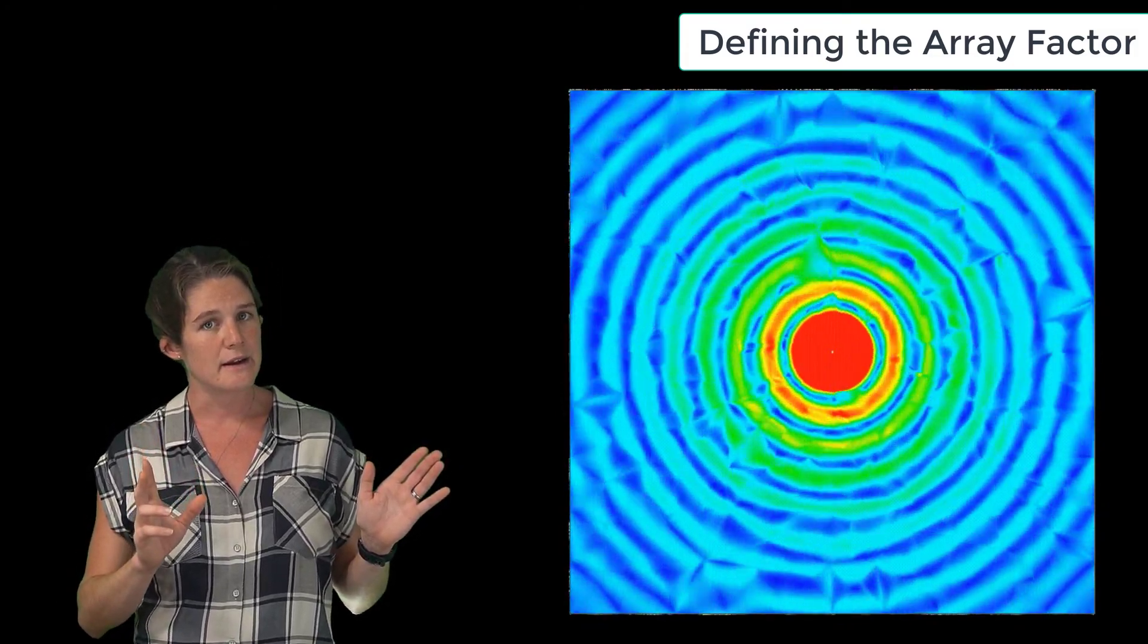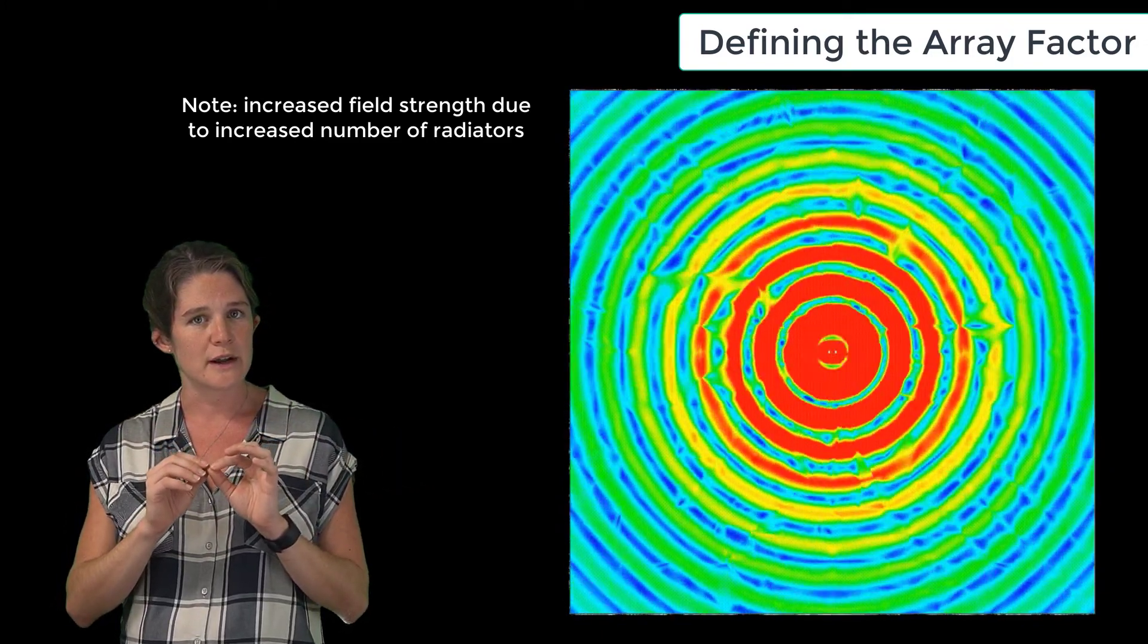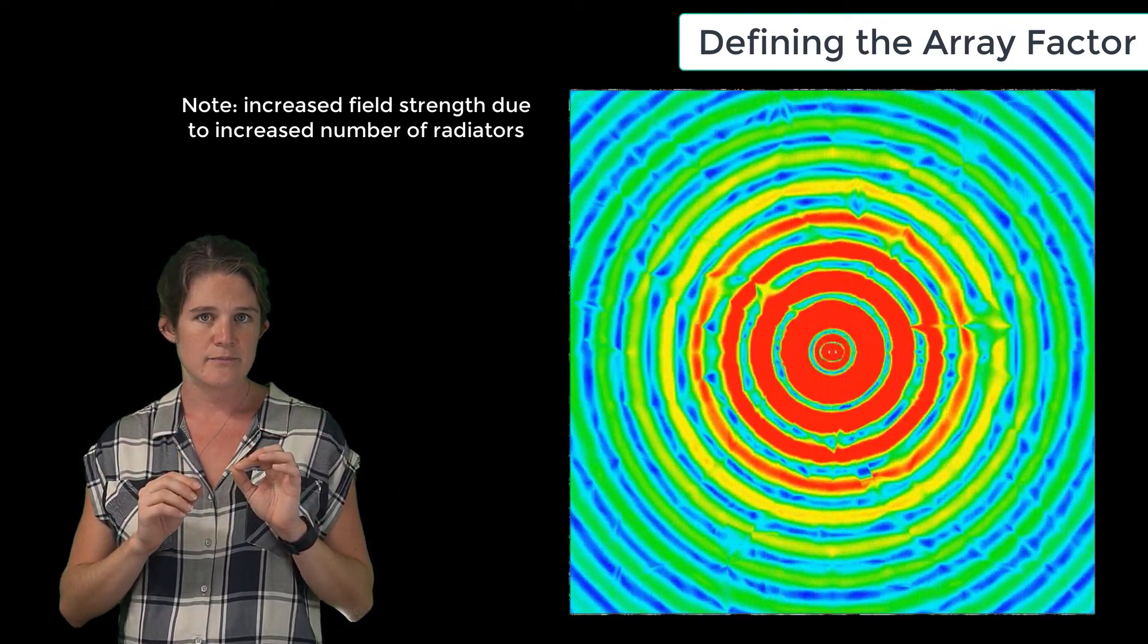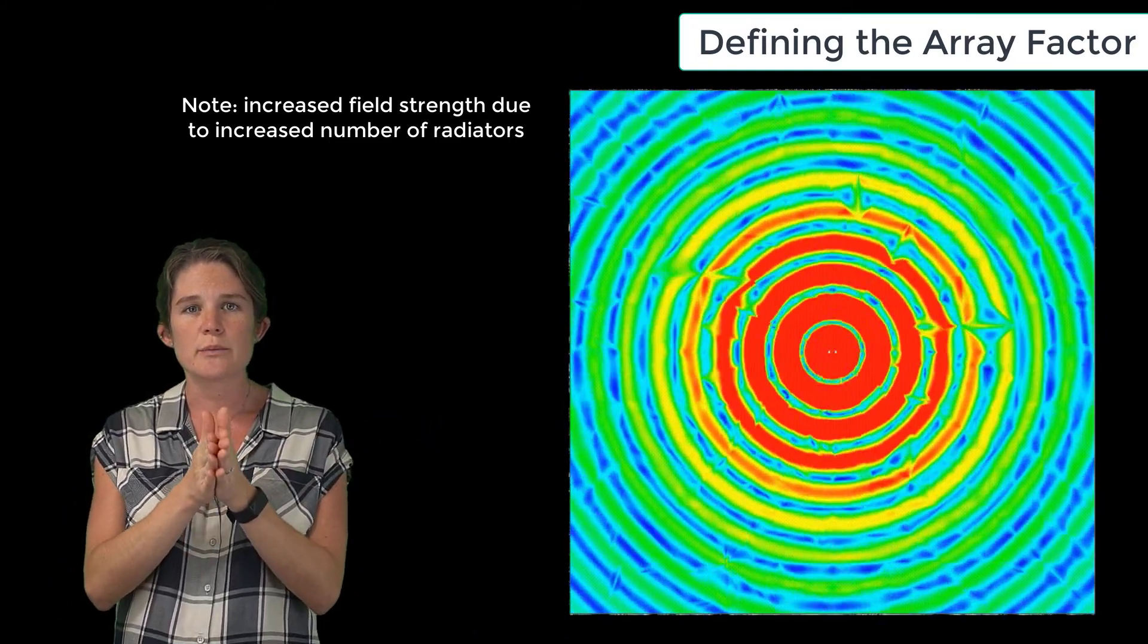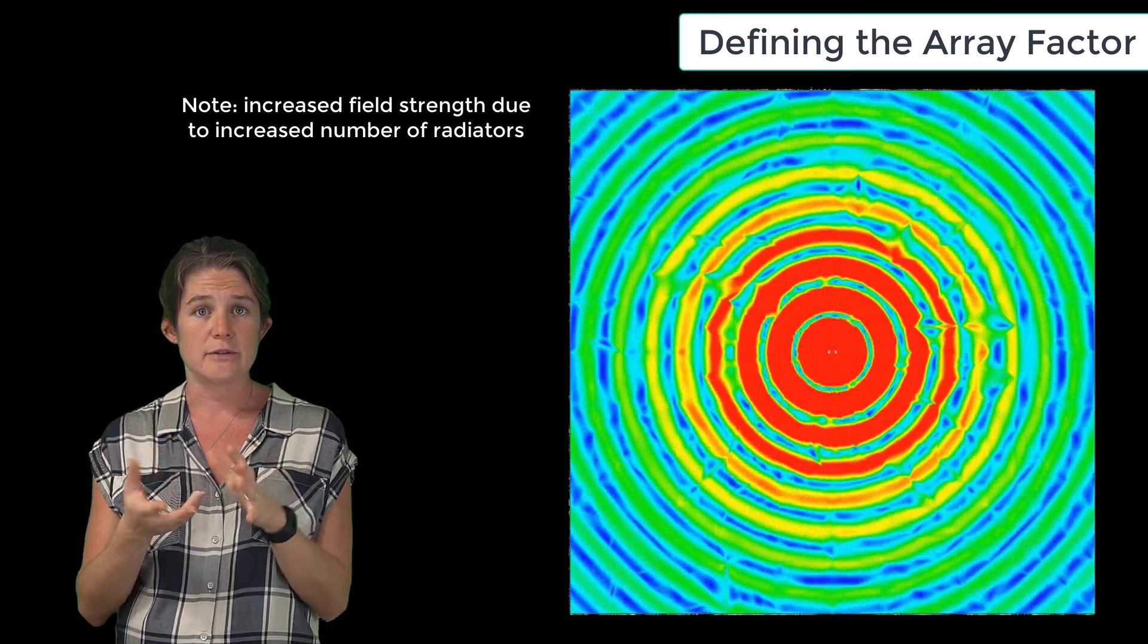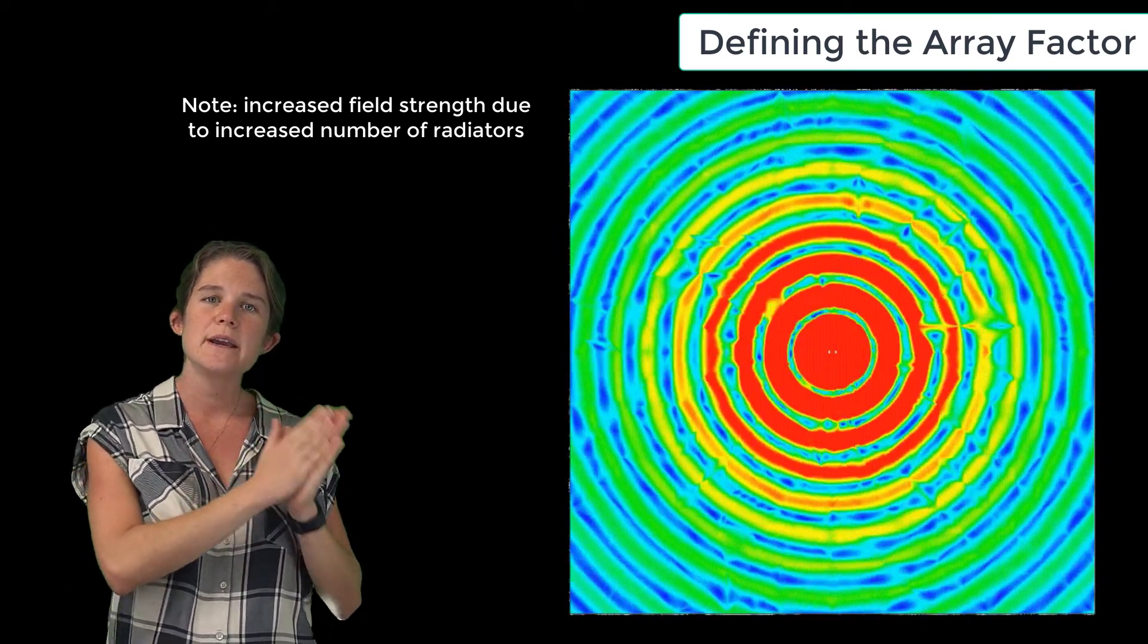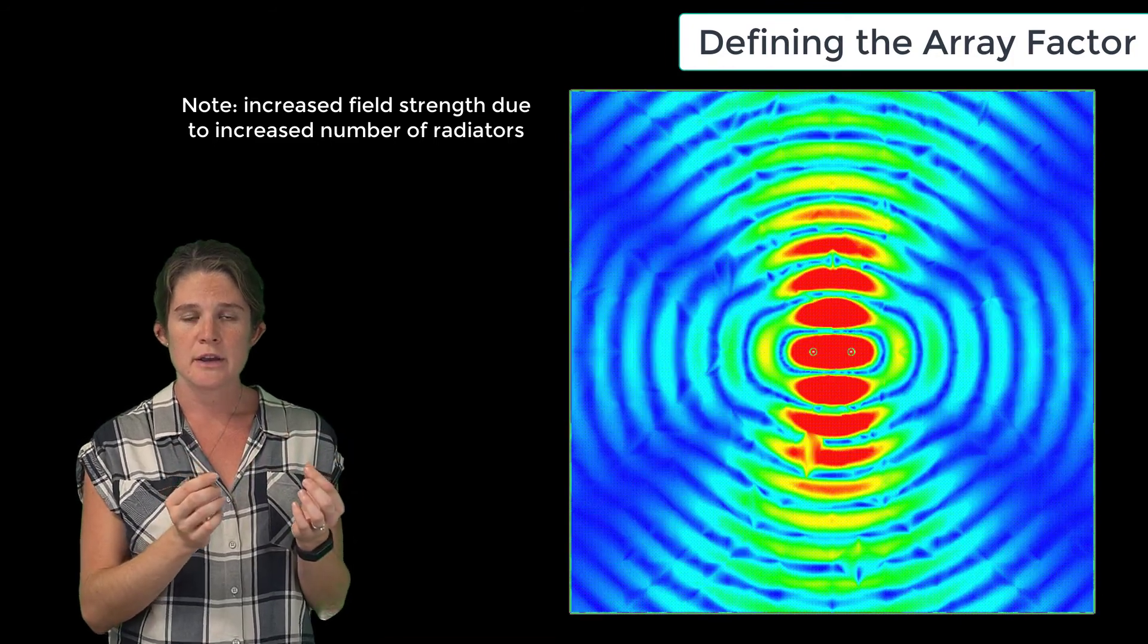And here is the radiation pattern from two isotropic radiators operating very close to one another and in phase. This still looks like the radiation from a single radiator because there's no appreciable separation between the elements, so there's no interference of the radiated fields.